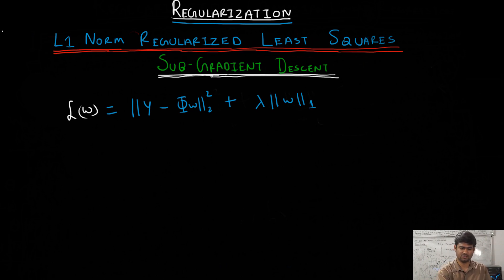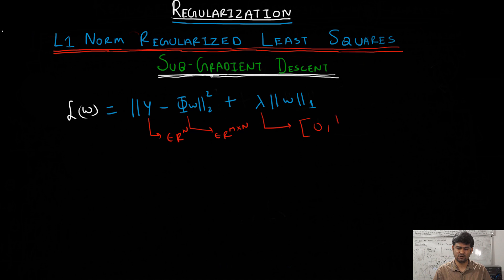Here, Y is a vector of target values, Phi is a feature matrix, and W is an n-dimensional vector. Lambda is a hyperparameter belonging to the closed set [0, 1]. Lambda assigns the relative importance to the regularization term — the higher the value of lambda, the more weight we give to the penalty term corresponding to the L1 norm of W. The smaller the value of lambda, the smaller the importance given to this penalty term.